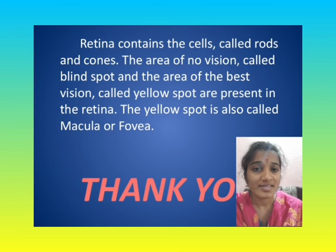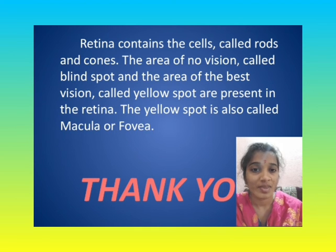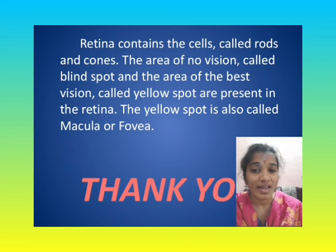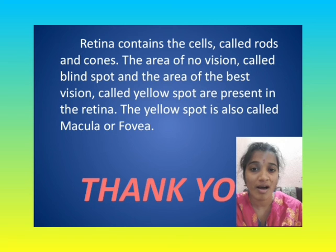The retina is the main layer of the eye and contains cells called rods and cones. The area of no vision is called the blind spot, and the area of best vision is called the yellow spot. The yellow spot is also called the macula or fovea.